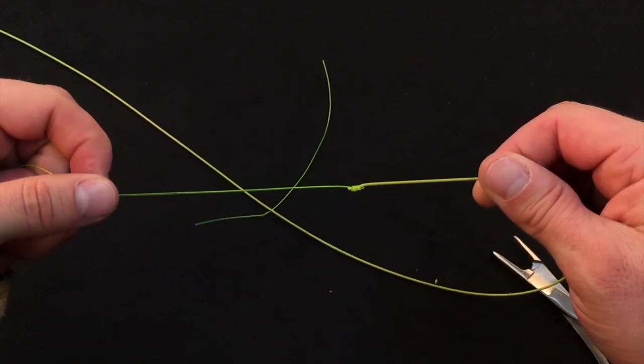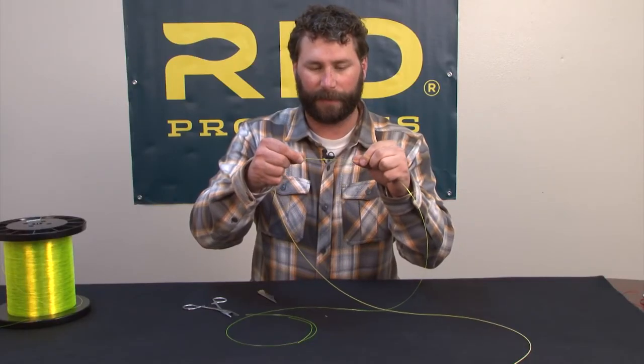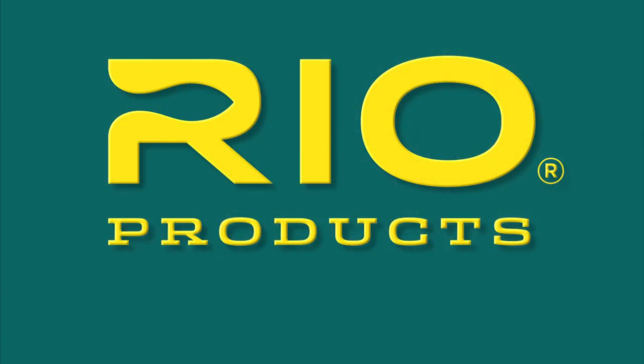Very fast, quick, easy way to tie a nail knot on the end of your fly line. A nail knot tied with the TyFast tool. RIO. Make the connection.